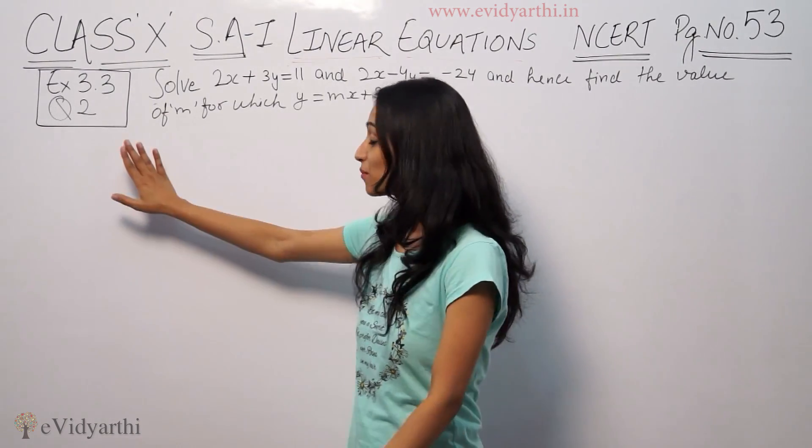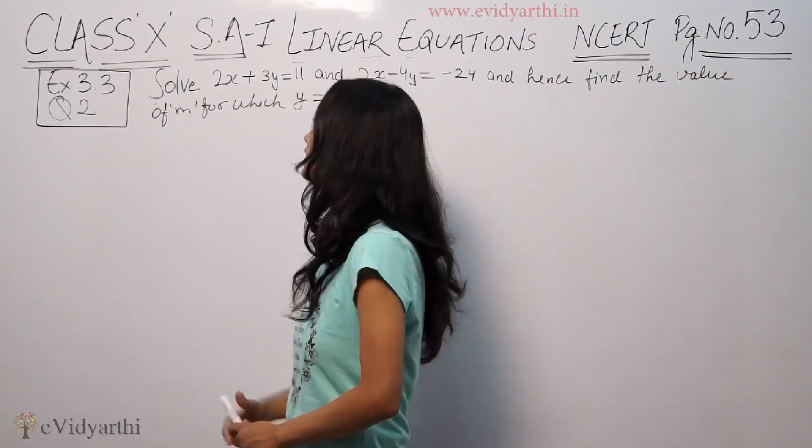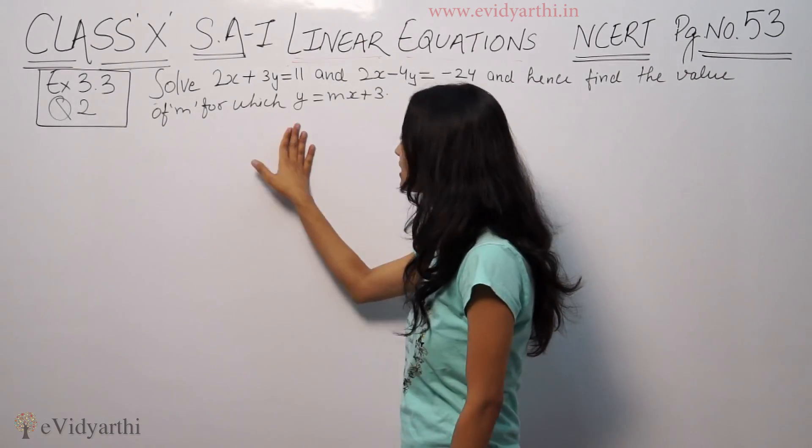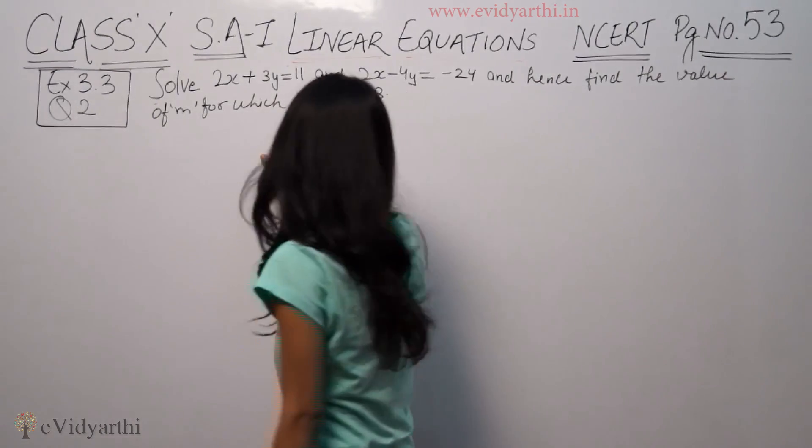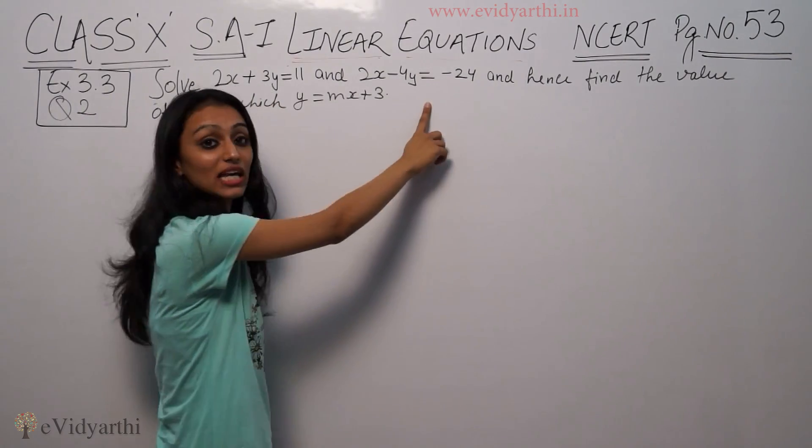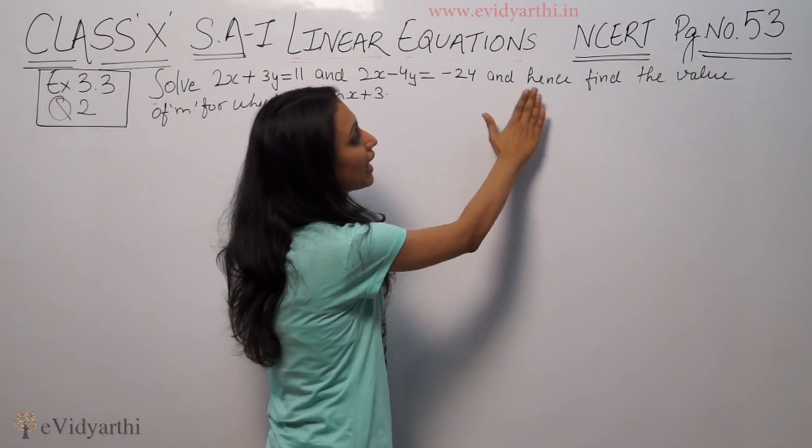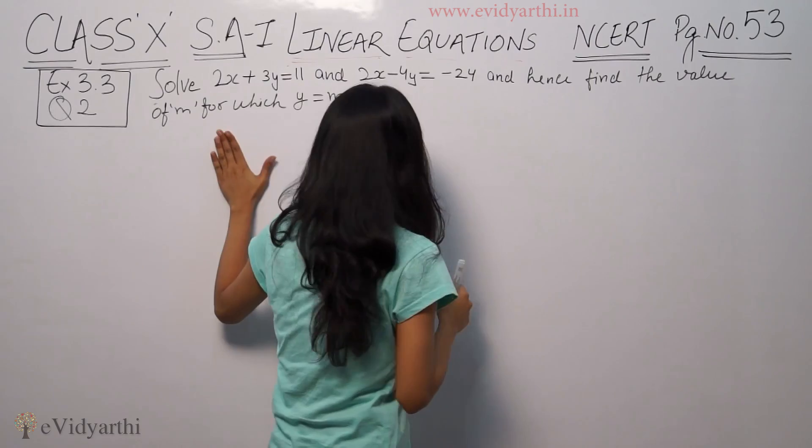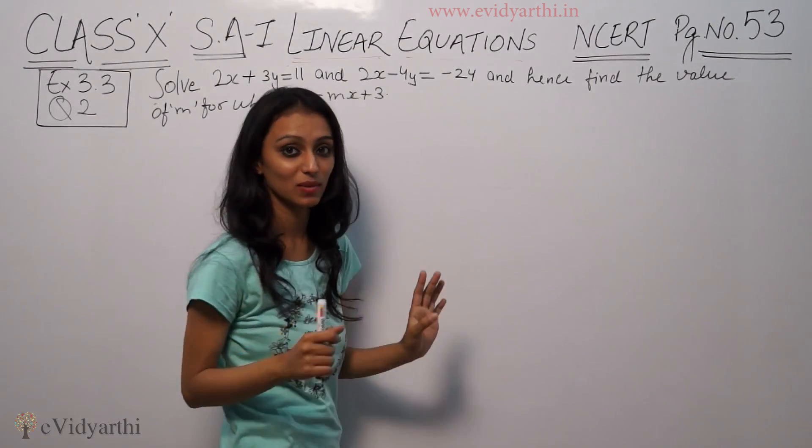Today we will do question number 2 of exercise 3.3. Solve 2x plus 3y equals 11 and 2x minus 4y equals minus 24, and hence find the value of m for which y equals mx minus 3.